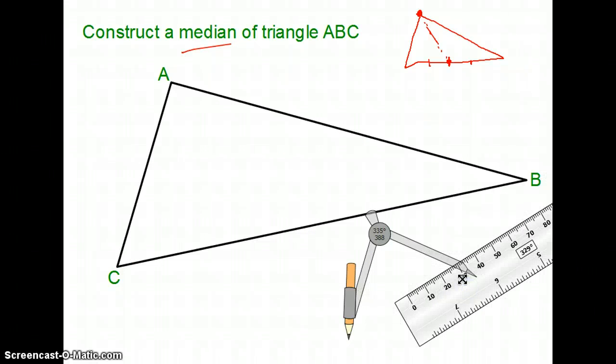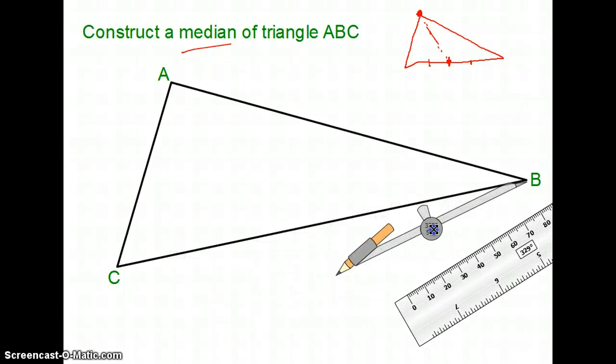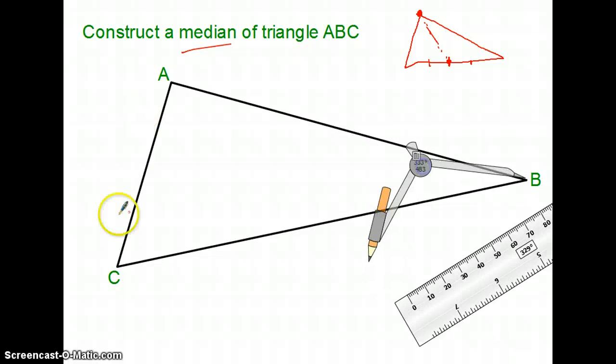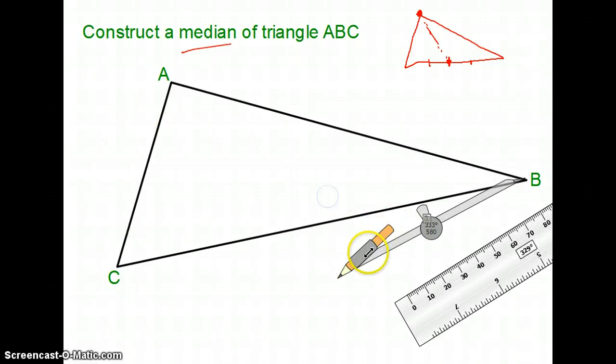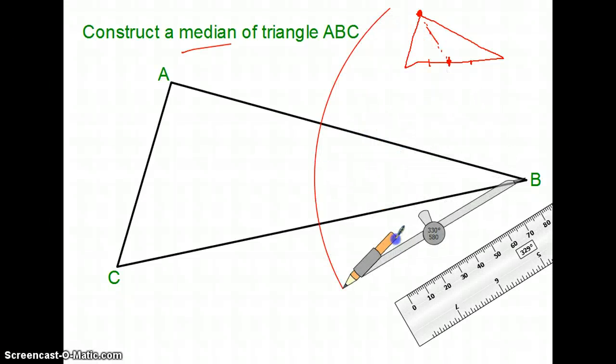This one says construct a median. So it kind of lets me go wherever I want. I could go from A to side BC, or I could go from B to side AC, or I could go from C to side AB. What I've got to do is locate one of those midpoints. Well, what do we have that locates midpoints from what we've already done? Notice I didn't say construct midpoint any time since I started. But we did do perpendicular bisector and perpendicular bisector cuts things in half.